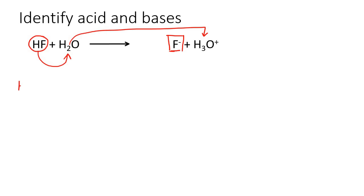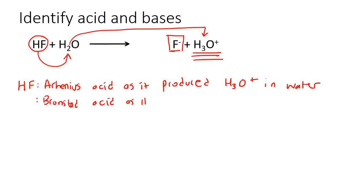So if we look at the HF, we can see that it is definitely an Arrhenius acid as it produced H3O+ in water. It is also a Bronsted acid as it gave away a proton.